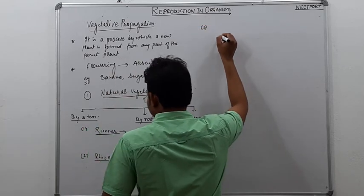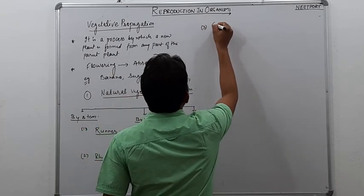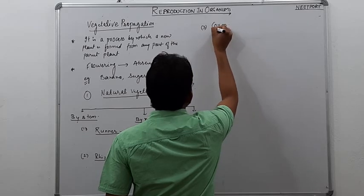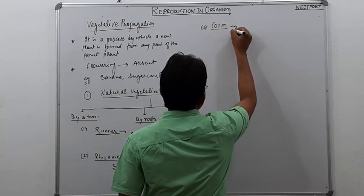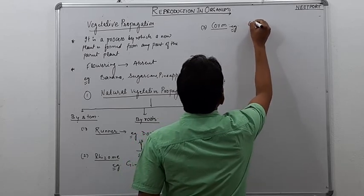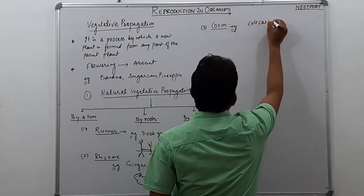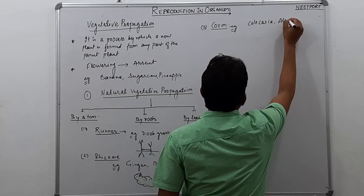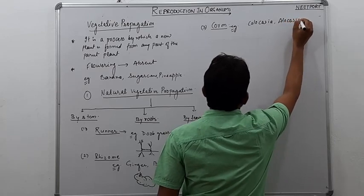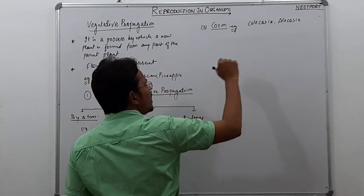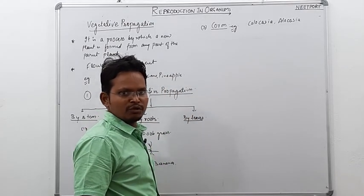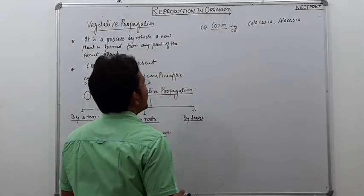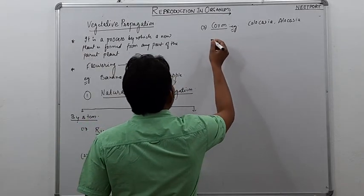Third is corm. This is an example of colocasia and alocasia. These are underground stems where buds and adventitious roots are formed, and then a new plant is formed.